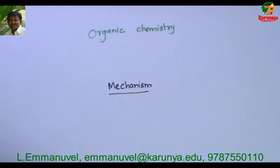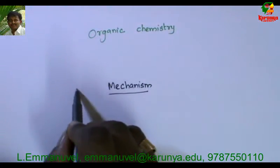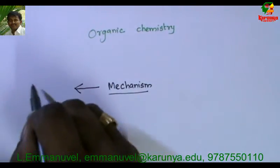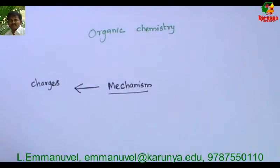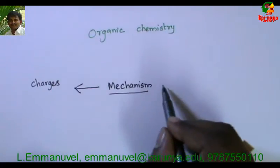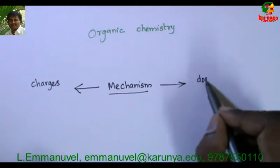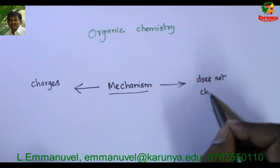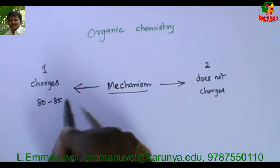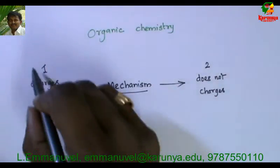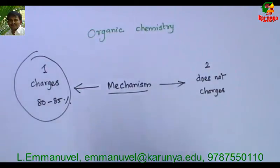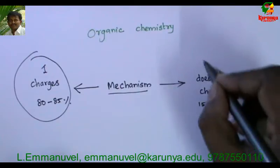There are several classifications for organic reactions like SN1, SN2, E1, E2, SNAr, and benzyne, but I classify organic reactions into two categories based on the mechanism. The first one: reactions that involve charges. The second one: reactions that do not involve charges. Nearly 80 to 85 percent of organic reactions fall under the first category, and the remaining 15 to 20 percent are the second category.